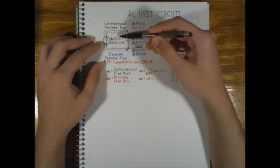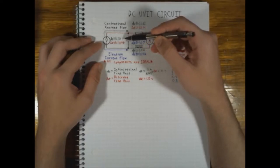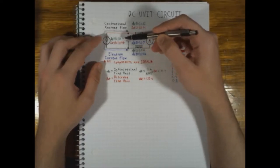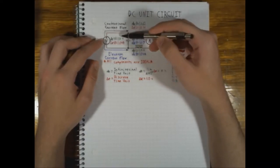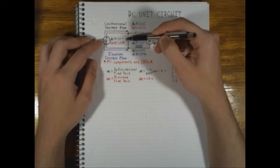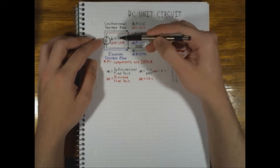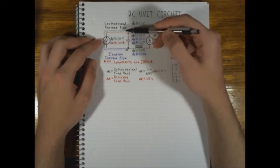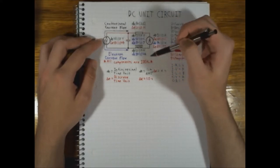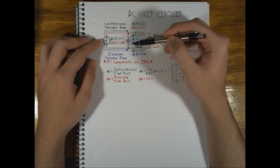Our ideal voltage source is putting out one volt and will source as many amperes as it needs to in order to power the rest of the circuit.